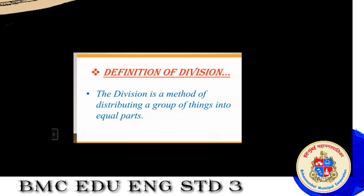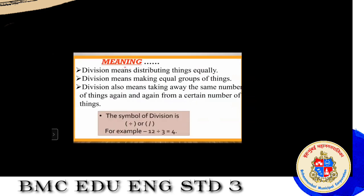Now we will see the definition of division. Division is a method of distributing a group of things into equal parts. Division means distributing things equally, making equal groups of things, and also taking away the same number of things again and again from a certain number of things.